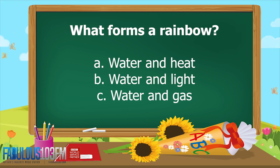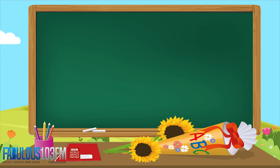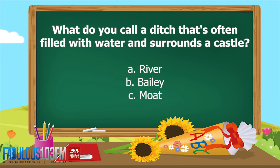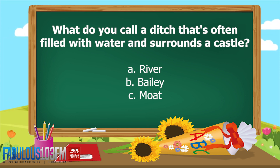And the last question to end the day: what do you call a ditch that's often filled with water and surrounds a castle? Is it A) a river, B) a bailey, or C) a moat?